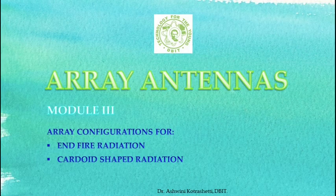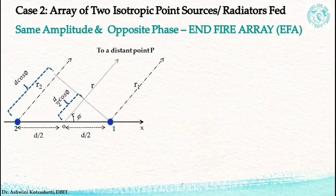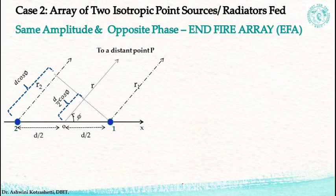Moving on to Case 2, where we have an array of two isotropic point sources which are fed in the same amplitude but in opposite phase. Unlike Case 1 that we have just discussed, the arrangement of the sources along the x-axis and all the relative terms remain the same. Let us now look into the vector representation for currents in phase — this is our reference line.